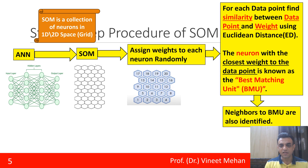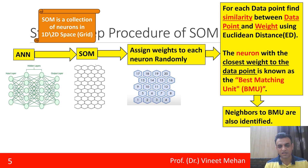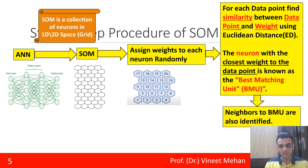The next step is that neighbors to the BMU are also identified. Just like in a group of friends where all friends share similar characteristics and form a close bond, similarly the BMU and its neighbors are those neurons that have similar characteristics. So neighbors to the BMU are also identified.